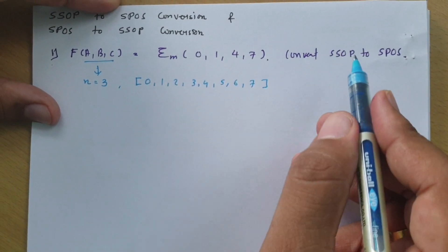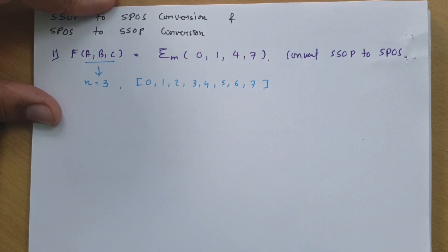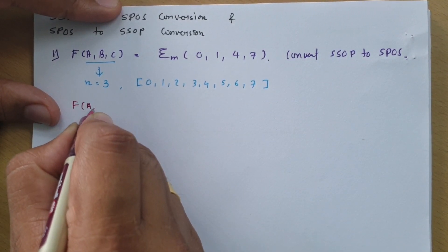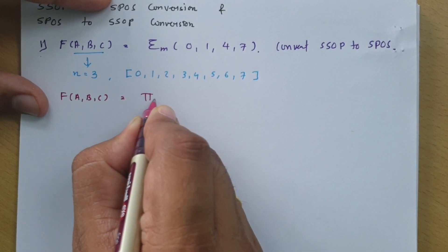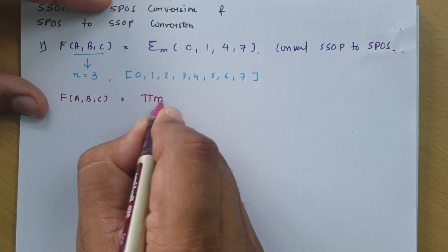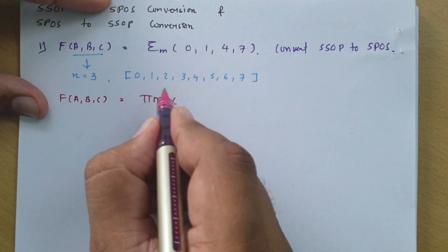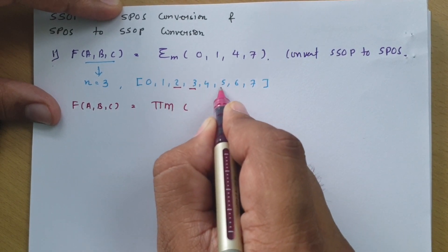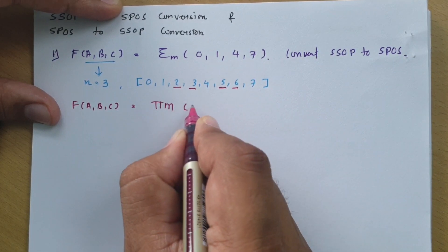Minterm and maxterm are complement to each other. So if you want to represent this function in terms of maxterm, that will be pi M (product of maxterms), which is the complement of the given minterms. So 0, 1, 2, 3, 5, and 6 — these are not there in the minterm, so I need to write those as maxterms.